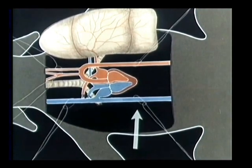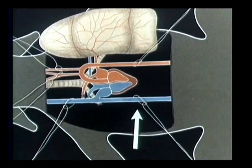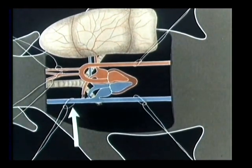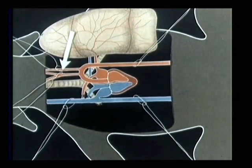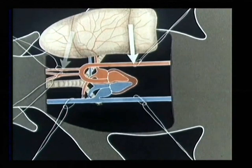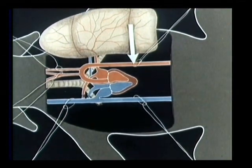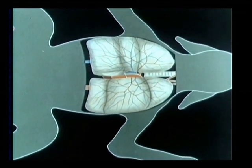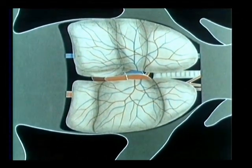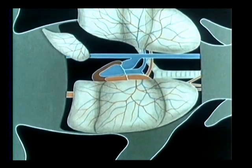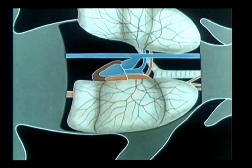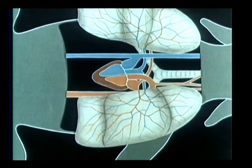The vena cava caudalis, the cranialis, the truncus brachiocephalicus, the arteria subclavia, and the aorta descendens were prepared for the later connections. The preparation of the Spenderhund showed that after the absetting of the mediastinal and the left underbinds of the lungs, the arteria subclavia was removed.